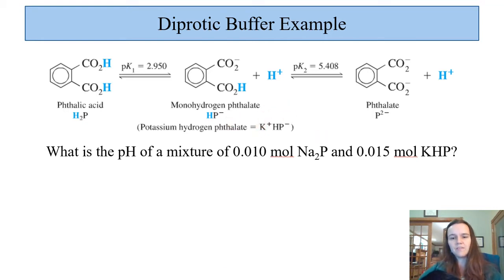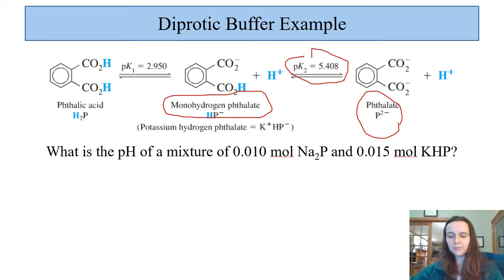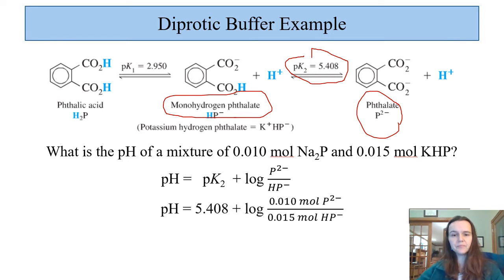Since we are working with the fully basic form Na2P and our intermediate form HP-, then we know that we can use pKa2. As a result, we use the Henderson-Hasselbalch for the second equilibrium. We take the pKa value and plug it in, and then we put our moles of the P2- and the moles of the HP- in as well. So that is our information from the question, where we always have the base on top of the acidic form. Calculating that out gives us a pH of 5.23.